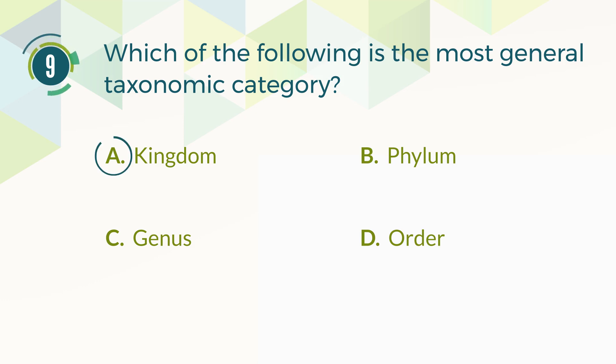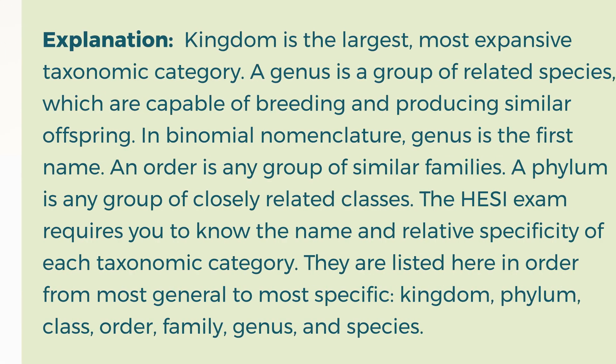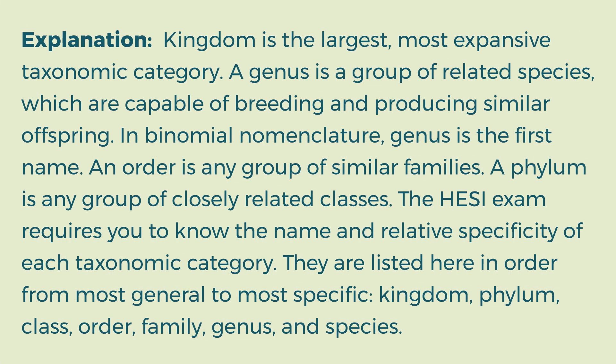The correct answer is A. Kingdom. Explanation: Kingdom is the largest, most expansive taxonomic category. A genus is a group of related species capable of breeding and producing similar offspring; in binomial nomenclature, genus is the first name. An order is any group of similar families. A phylum is any group of closely related classes. The HESI exam requires you to know the name and relative specificity of each taxonomic category. They are listed here from most general to most specific: kingdom, phylum, class, order, family, genus, and species.